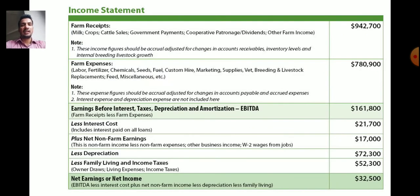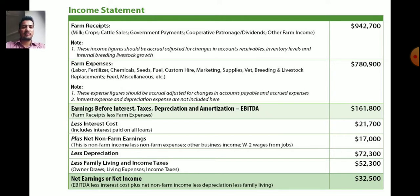Here is an example of an income statement with two major parts: farm receipts and farm expenses. Farm receipts include milk, crop, cattle, government payment, cooperative, rent-out dividends, and other farm sources of income. Expenses may include labor charges, fertilizer, chemical costs, and other farm expenses. The statement calculates earnings before interest, tax, depreciation, and amortization (EBITDA), then deducts interest cost, adds net non-farm earnings, deducts depreciation, deducts family living income taxes, and arrives at net earnings or net income.